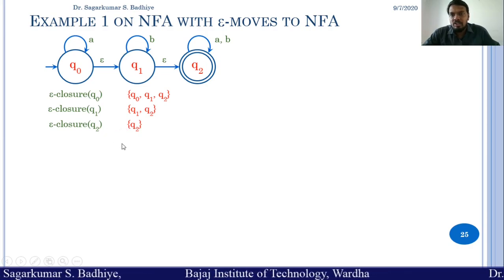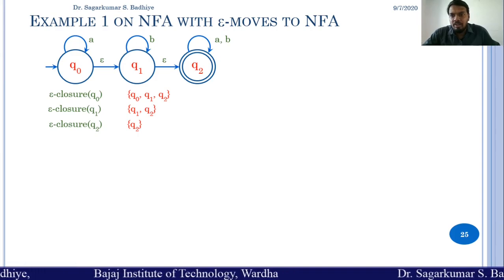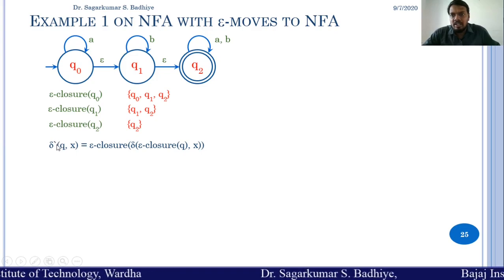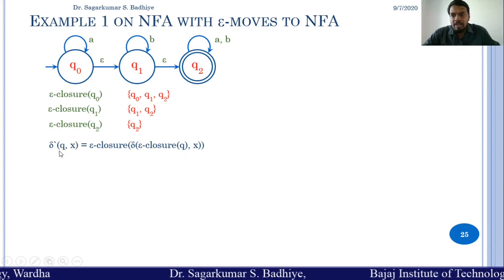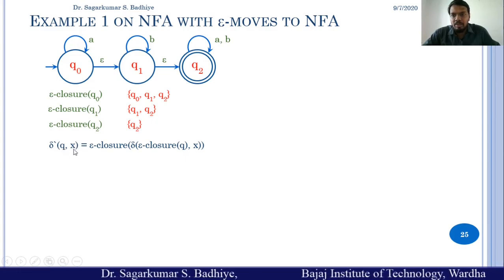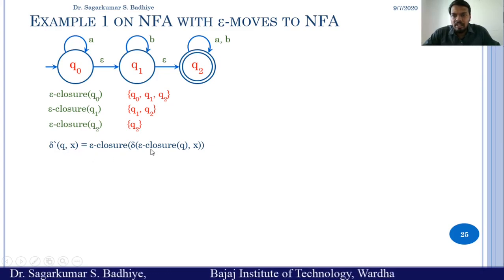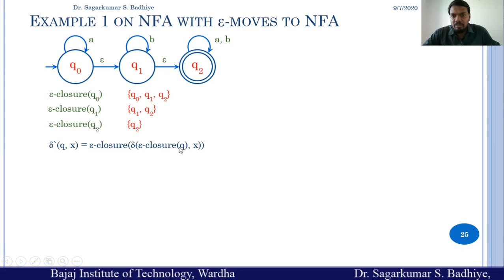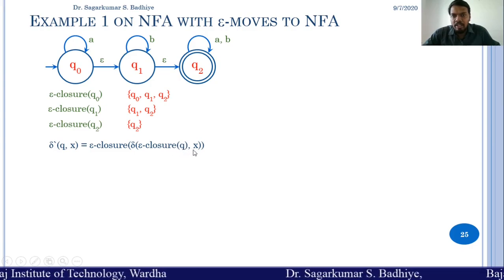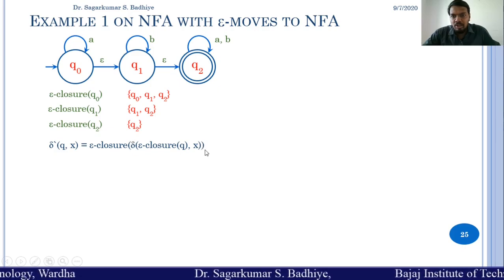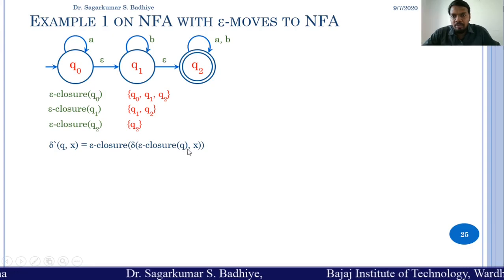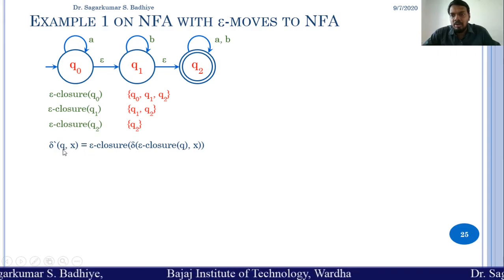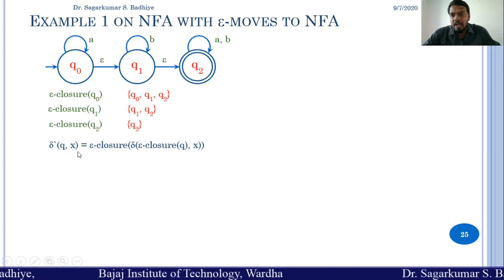The next step is to obtain the transitions in the equivalent NFA. Delta dash represents the transition in the equivalent NFA. Delta dash of q comma x, where q is a state and x is the input symbol, is computed by first finding the epsilon closure of q, then finding transitions from all those states on input x, and finally taking the epsilon closure of the resulting set of states.